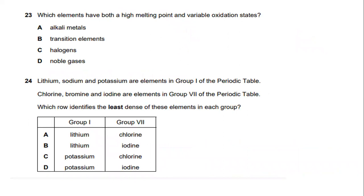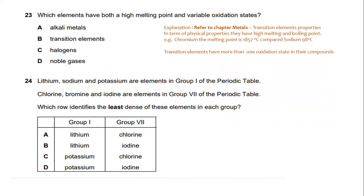Which elements have both a high melting point and variable oxidation state? Refer to chapter metals — transition element properties. In terms of physical properties, they have high melting and boiling points. For example, chromium has a melting point of 1857°C, while sodium has a melting point of about 98°C. Transition elements have more than one oxidation state in their compounds. The answer for question 23 is B, transition elements.